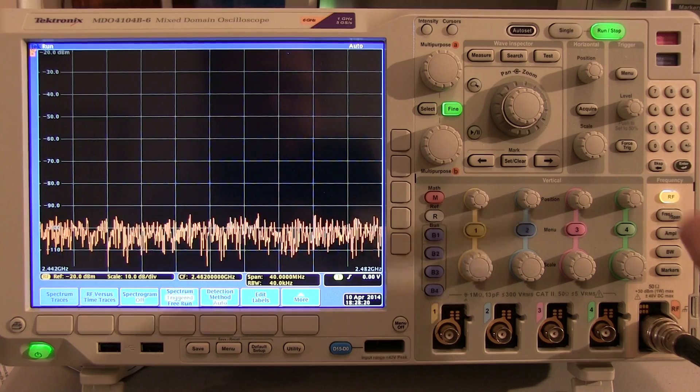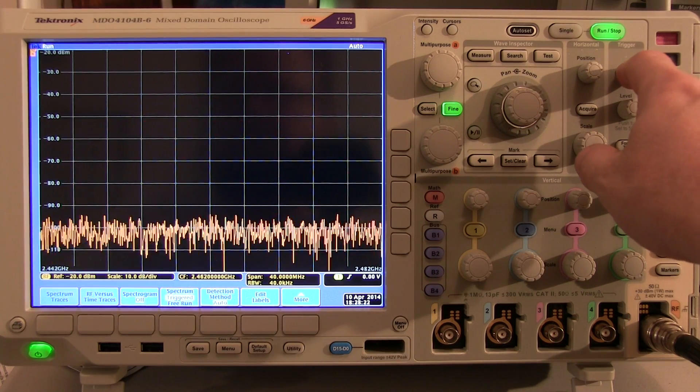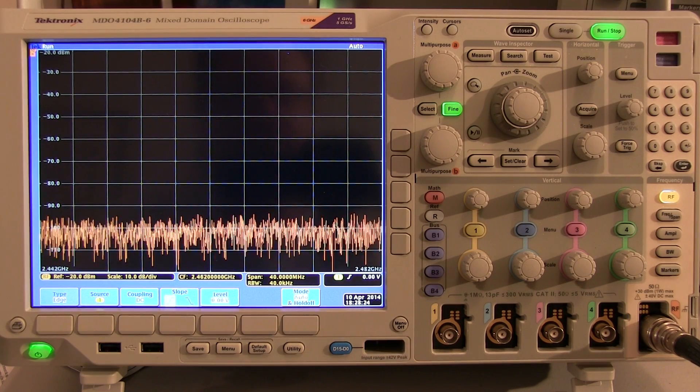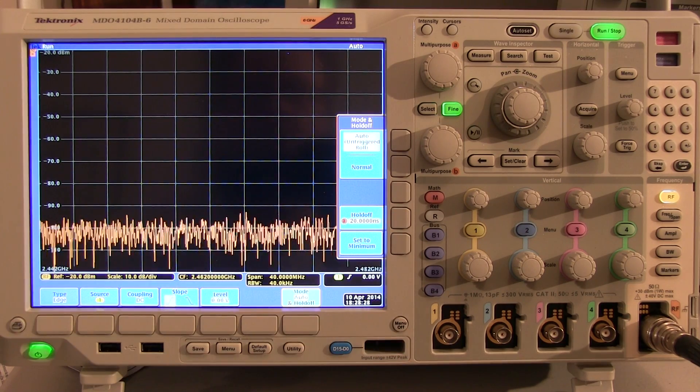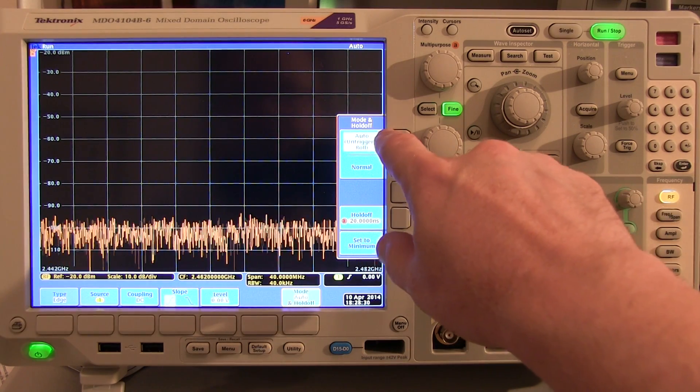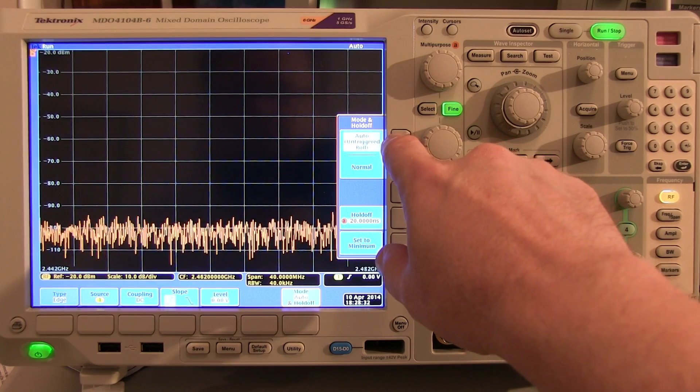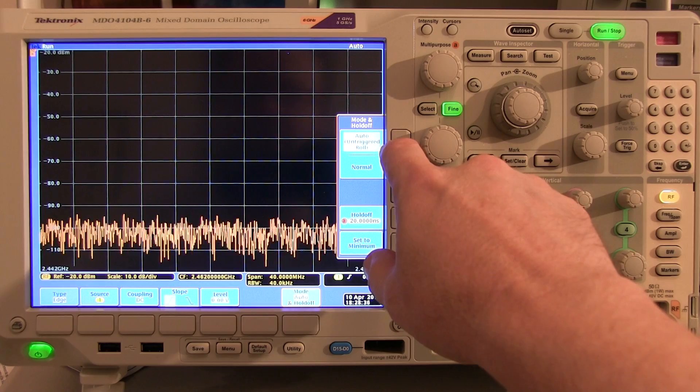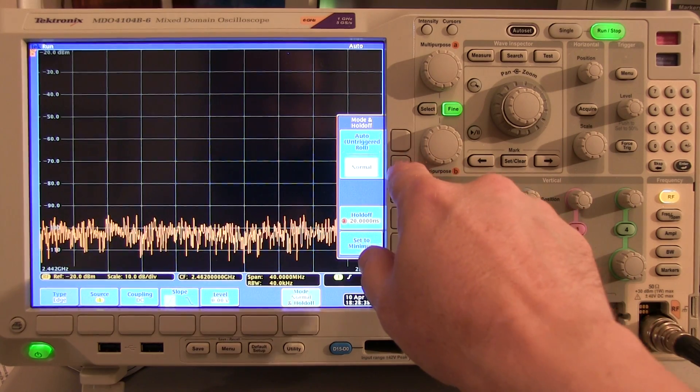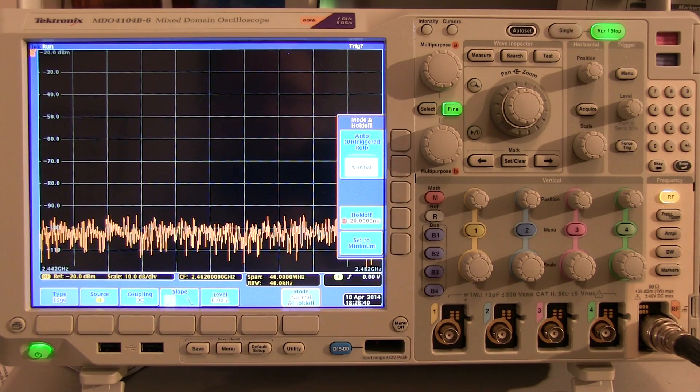And next we need to go set up the trigger conditions. I'll bring up the Trigger menu here, and the first thing I'm going to do is change the trigger mode from Auto to Normal. Auto Trigger basically says if I don't get a trigger event within 100 milliseconds or so, I'm going to grab an acquisition anyway. Normal Trigger will only grab acquisitions in response to a trigger. So that's what we want.